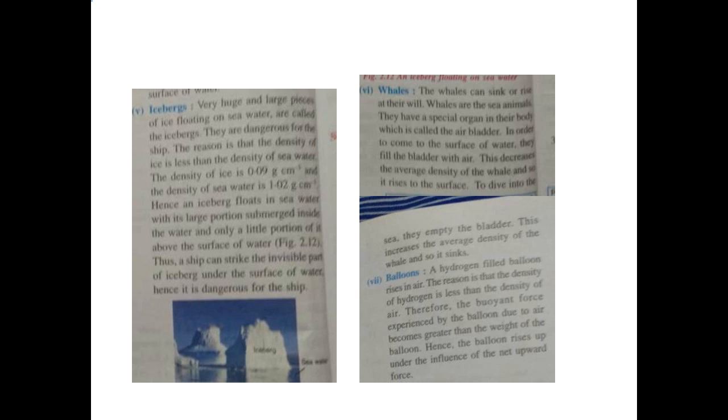An iceberg floats in sea water with its large portion submerged inside the water and only a little portion above the surface of the water. Thus a ship can strike the invisible part of the iceberg under the surface of the water, making it dangerous for ships. So children, if someone asks you why ice floats in a cold drink or soft drink, the reason is that the density of ice is 0.9 gram per centimeter cube while water is 1 gram per centimeter cube — since ice is lighter, it floats.